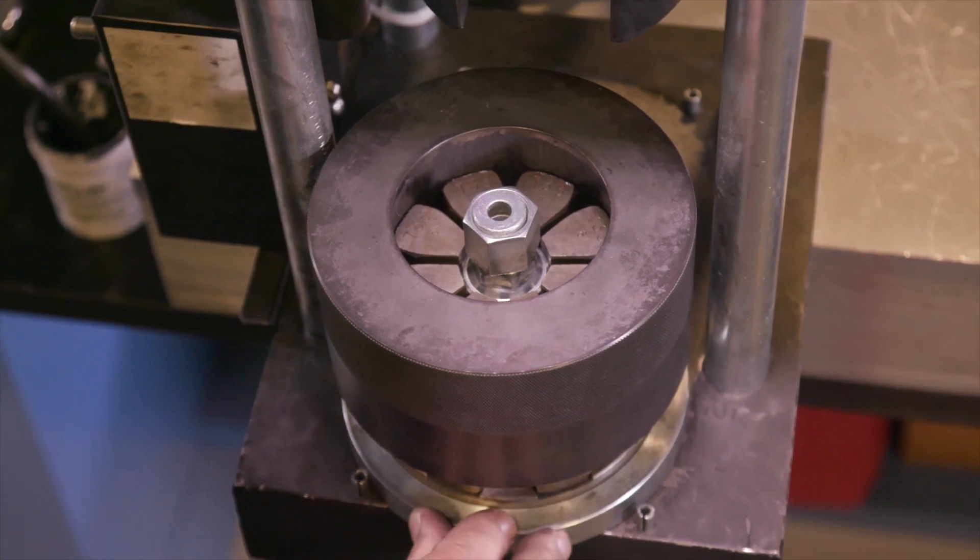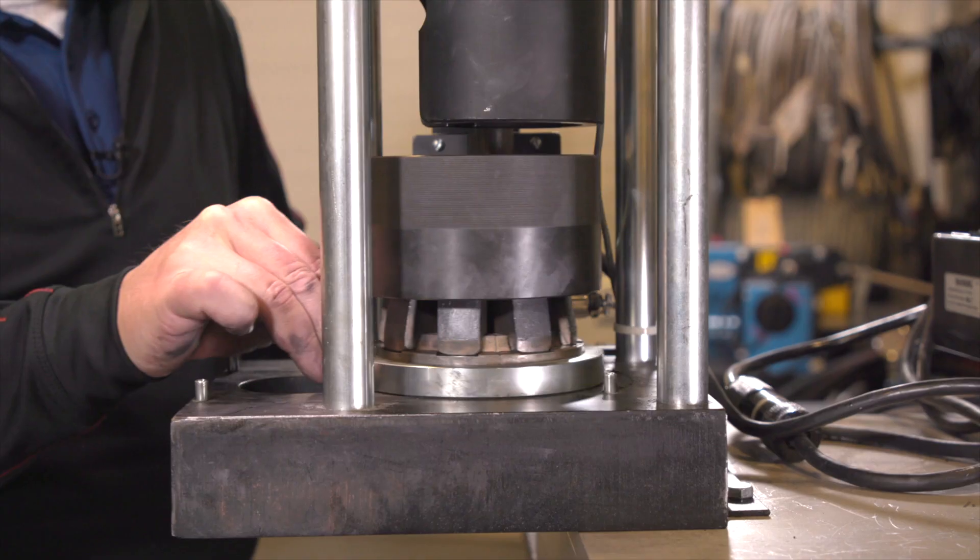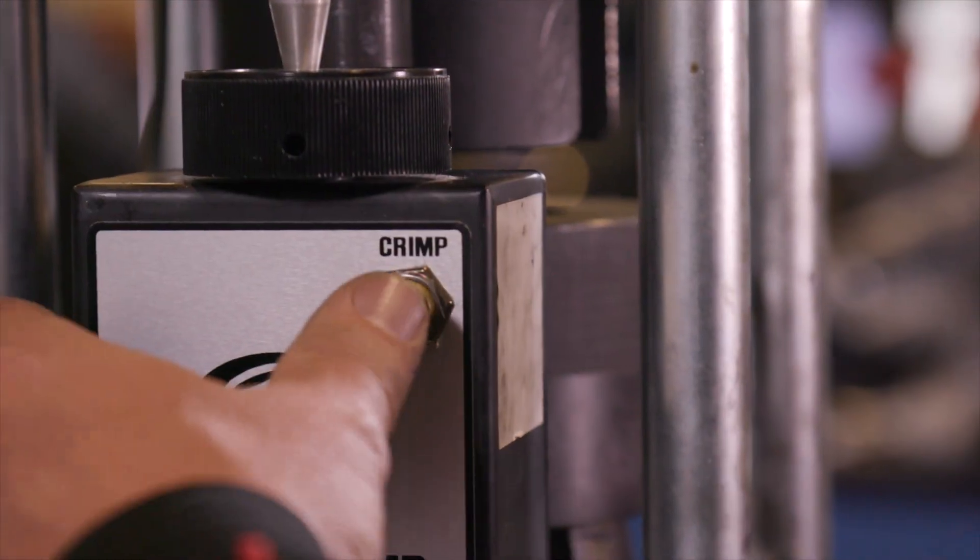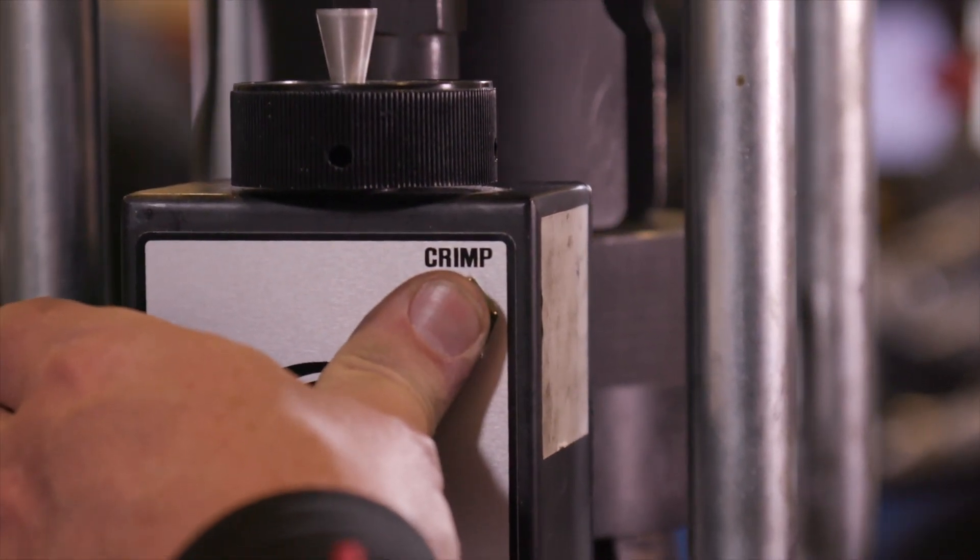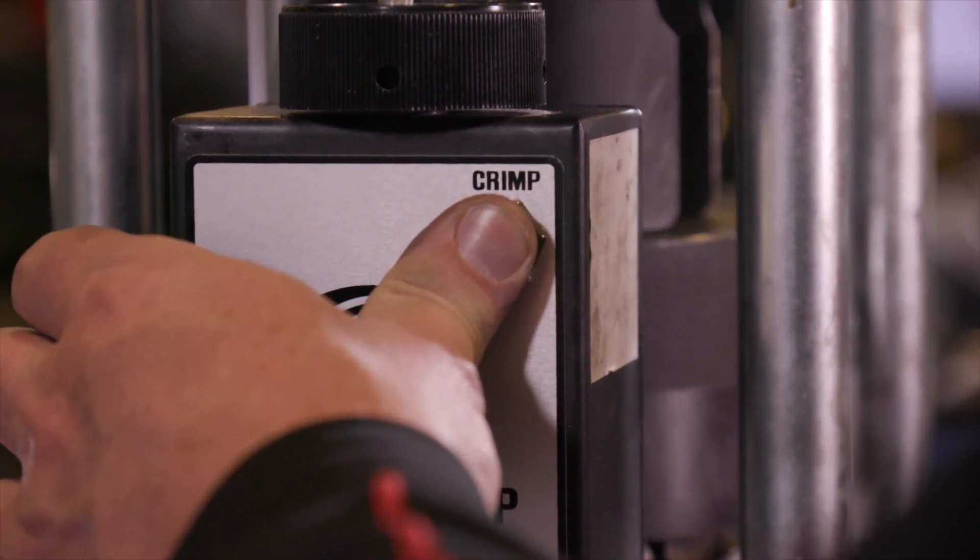Slide the die cone assembly under the ram until it stops against the back locating pins. Push the crimp button and hold. Release the button immediately when the pump stops.